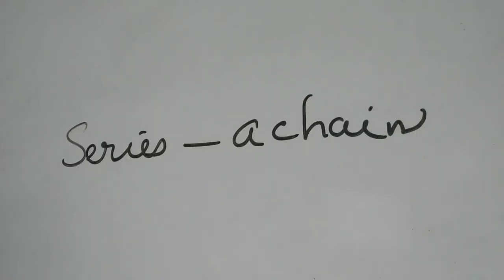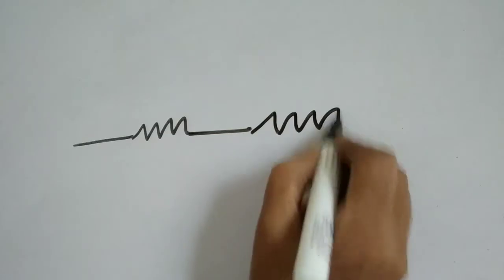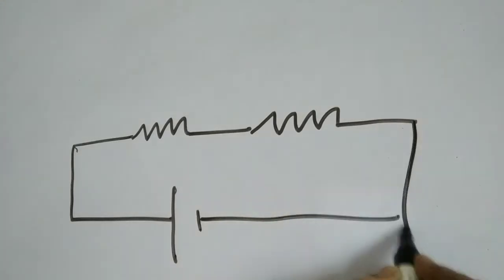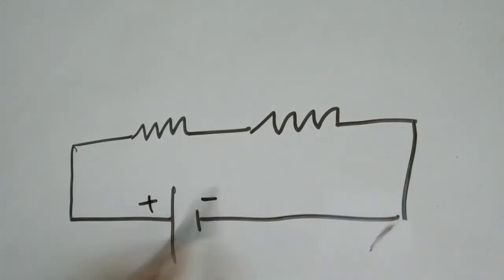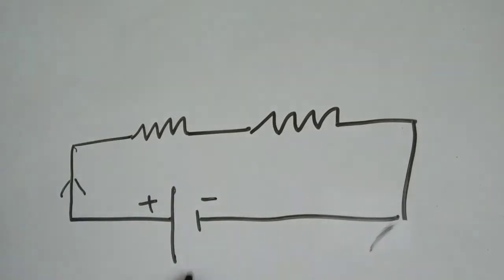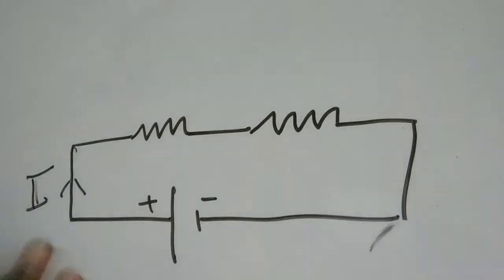When we are connecting the series circuit, suppose we are connecting the resistors in series. For example, I connect one resistance here, another resistance here along with a cell, positive and negative. The current flows from positive to negative. Let I be the current flowing through the circuit. The total amount of current released from the cell is I.